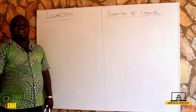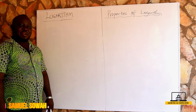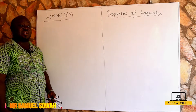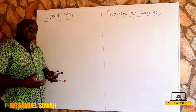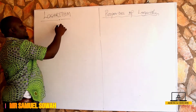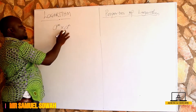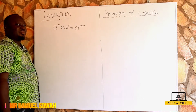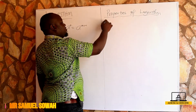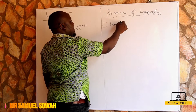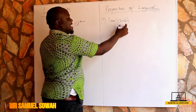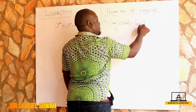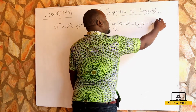We are going to discuss the properties of logarithm. In indices, we know that when we have a raised to the power m times a raised to the power n, because they are multiplying, we add the index to get a raised to the power m plus n. The same way, when it comes to logarithm, if we have log a times b all to the base c, we add them: this becomes log a to the base c plus log b to the base c.